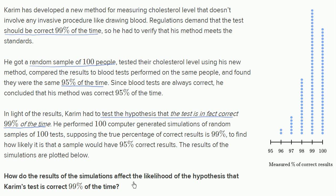How do the results of the simulations affect the likelihood of the hypothesis that Kareem's test is correct 99% of the time? What he's doing is: he got his test on one sample and his test was right 95% of the time. But what he really wants to figure out is the probability of that happening, assuming his test is actually correct 99% of the time.